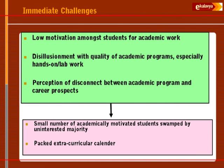We looked at immediate challenges and defined an approach to address them. Some immediate challenges were: low motivation among students for academic work, disillusionment with the quality of the academic programs especially hands-on and lab work, and the perception of disconnect between the academic program and career prospects. We identified these as the key things — if you address these, you're probably doing a pretty decent job. These three issues led to a small number of academically motivated students surrounded by a huge uninterested majority.